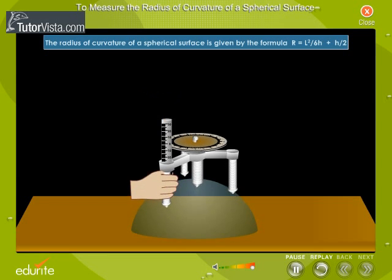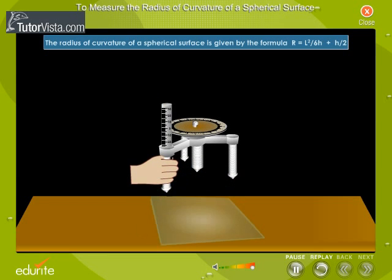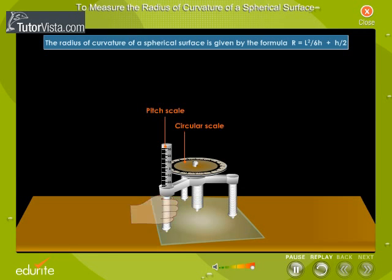Remove the spherometer from the spherical surface and place over a plain glass slab. Turn the screw downwards and count the number of complete rotations, N1, made by the disc. Continue till the tip of the screw just touches the plain surface of the glass slab.